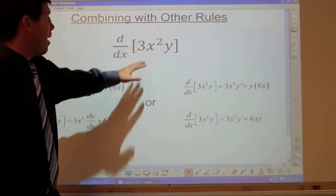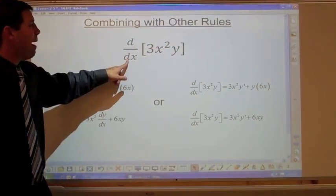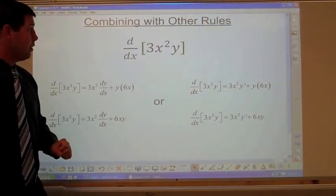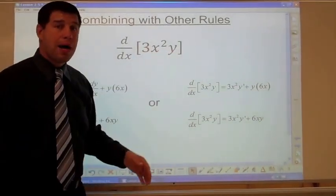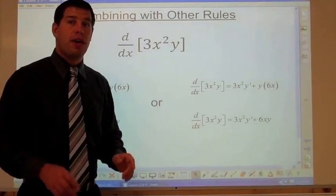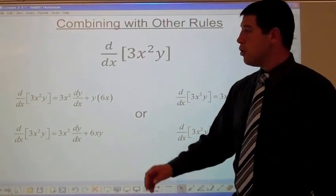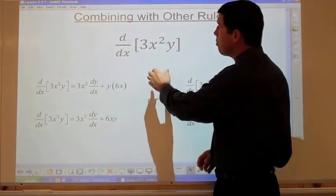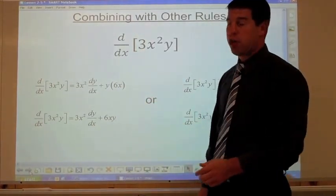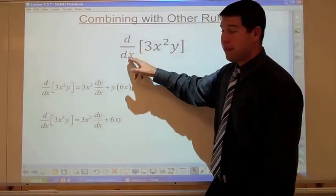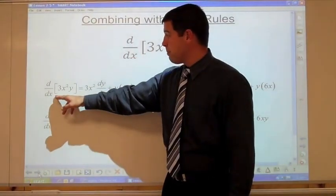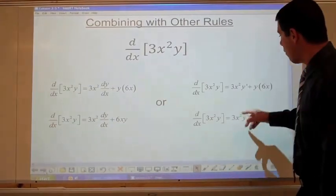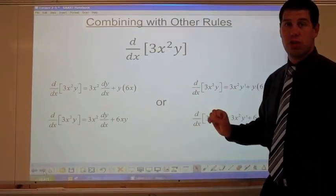Now we're going to derive an expression with both x and y terms with respect to x. For the derivative of 3x squared times y, you notice you have a product, so you use the product rule: first times derivative of the second, plus second times derivative of the first. Using 3x squared as your first term and y as your second, and remembering we're deriving with respect to x.